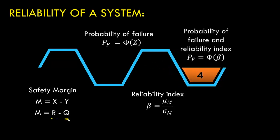Probability of failure and reliability index can both be used to assess the performance of the system, and that is why these two are related. We can say probability of failure equals phi of negative beta, where phi is the standard normal distribution function.